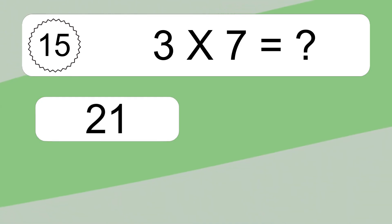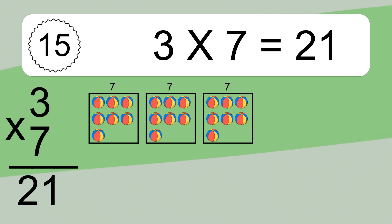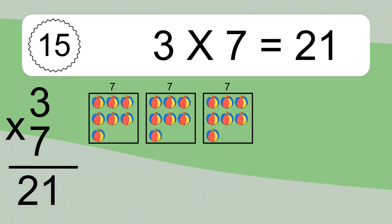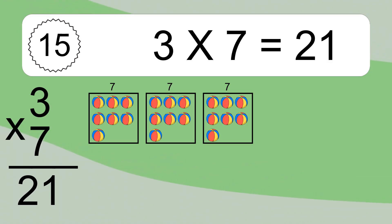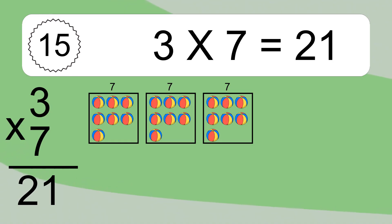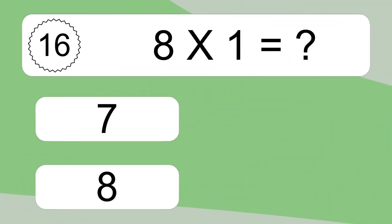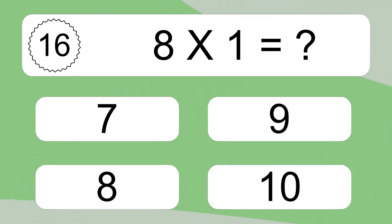3 times 7 equals 21. We have 3 boxes and each box has 7 colorful balls inside. If you count all the balls in all the boxes together, you will have 3 times 7 balls. This equals 21 balls. 8 times 1 equals what?